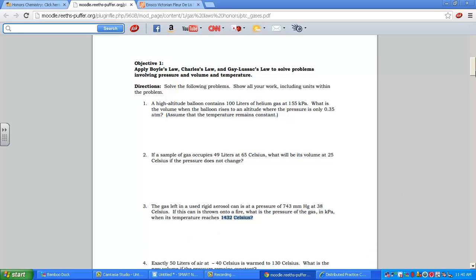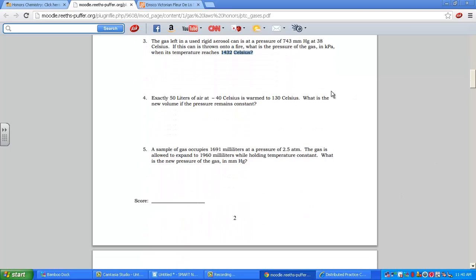Let's try another. Number 4. We have 50 liters of air at negative, that's a negative sign, so cold. Negative 40 Celsius. We're going to warm that up quite a bit, up to 130 degrees Celsius. What's the new volume? Pressure's constant, so I know that's a Charles's Law. V over T for Charles.